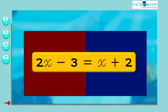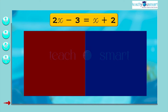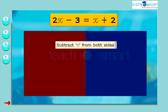In 2x minus 3 equals x plus 2, the LHS contains the variable part 2x and the RHS contains x. To find the value of x, we must remove the variable part from the RHS. For that, subtract x from both sides: 2x minus 3 minus x equals x plus 2 minus x.